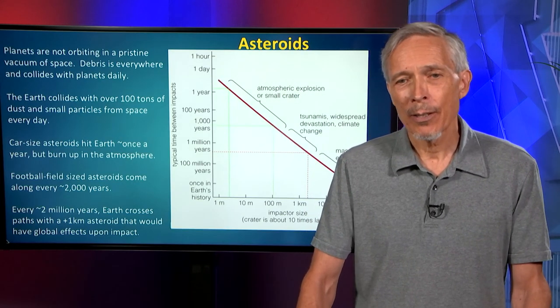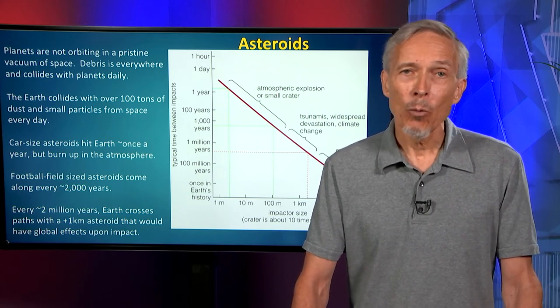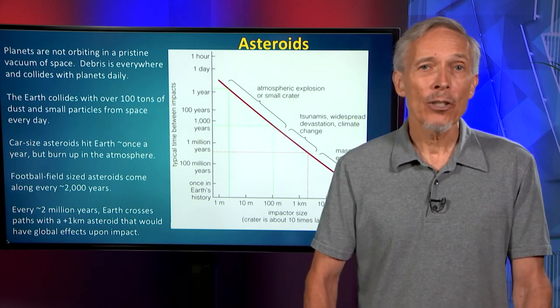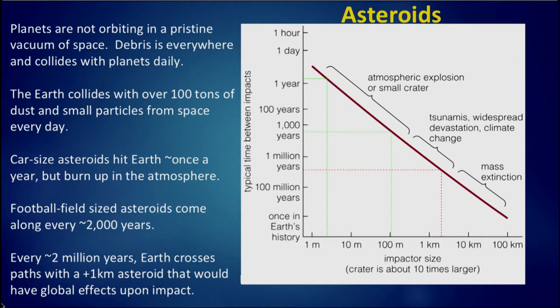What causes mass extinction events? One of the agents is clearly external forces, in particular impacts from space debris. Planets do not orbit in a pristine vacuum — there's debris left over from formation, and in the solar system there's the asteroid belt and various meteors floating through space. This debris is everywhere and collides with planets daily. The cratering history of the Moon and Mercury, planets without atmospheres, shows clearly how much debris impacts over cosmic time. The Earth collides with about 100 tons of dust and small particles from space every day, but because of our atmosphere most of these particles burn up in the upper atmosphere — that's what you see as a shooting star.